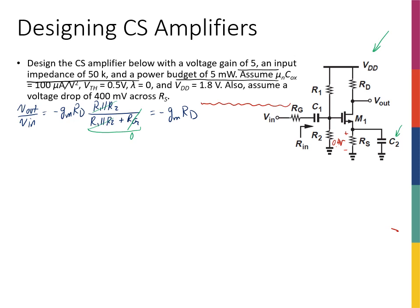The power budget is 5 mW, drawn from VDD. There are two currents from the supply: the drain current ID and a bias current IB. So: P = VDD × (ID + IB) = 5 mW. With VDD = 1.8 V, this gives ID + IB = 5 mW / 1.8 V ≈ 2.78 mA.